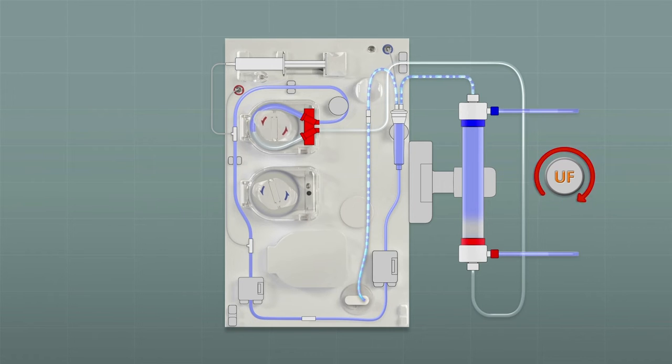Air is removed from the dialyser and the bloodline so the LX automatically changes the blood pump speed and uses the venous clamp to remove air bubbles from the dialyser.